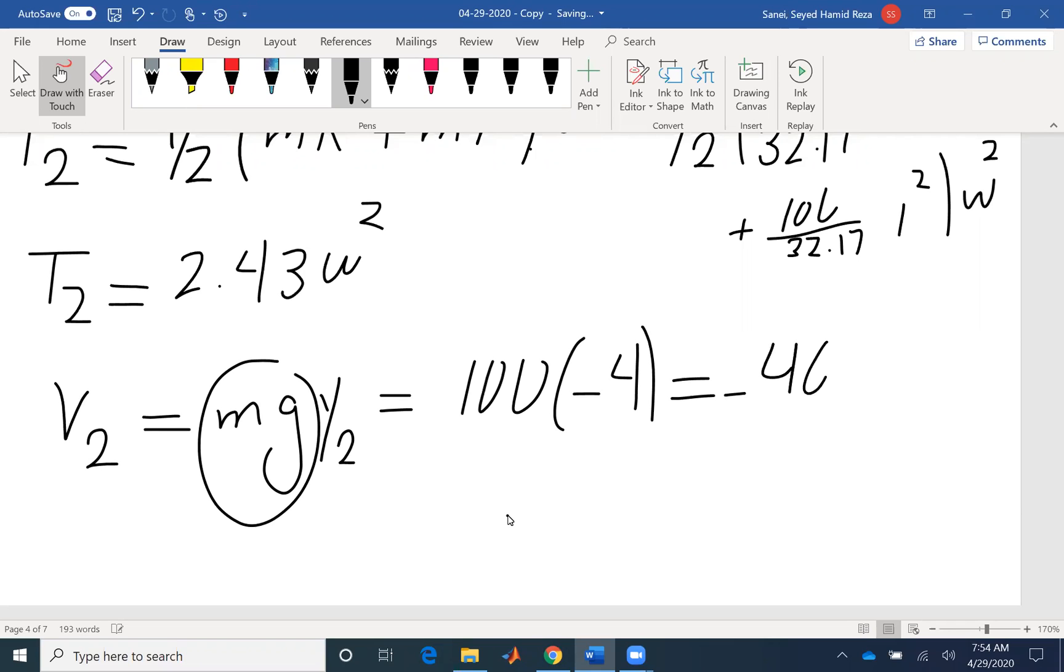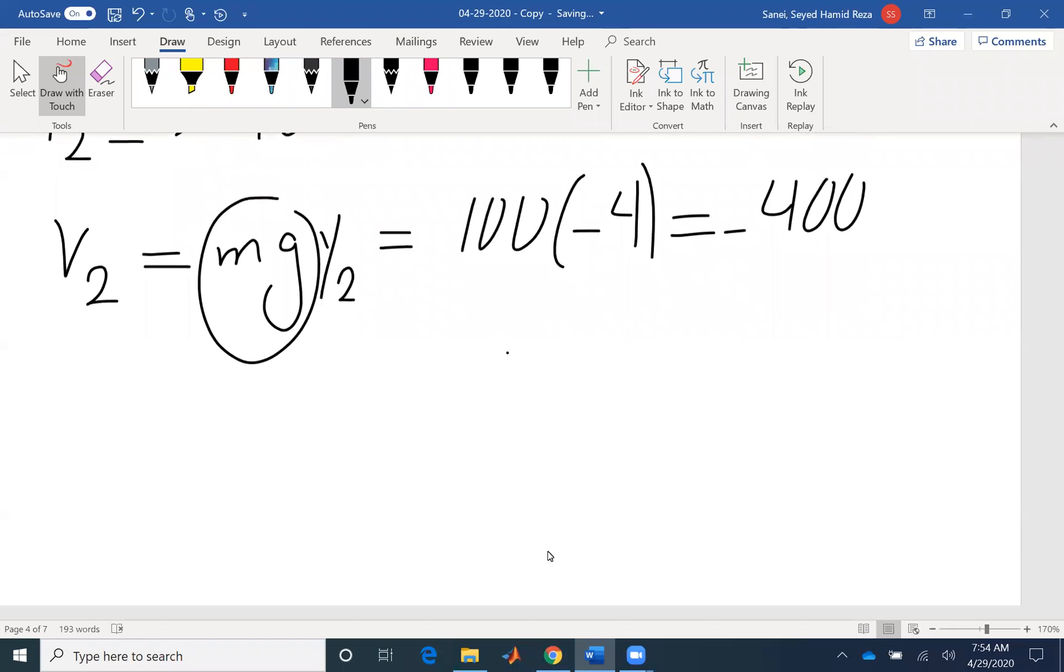So that would be negative 400. We are losing 400, but we have to gain 400, but in different form, in kinetic energy. So negative 400 would be 2.43 omega squared equals 0.